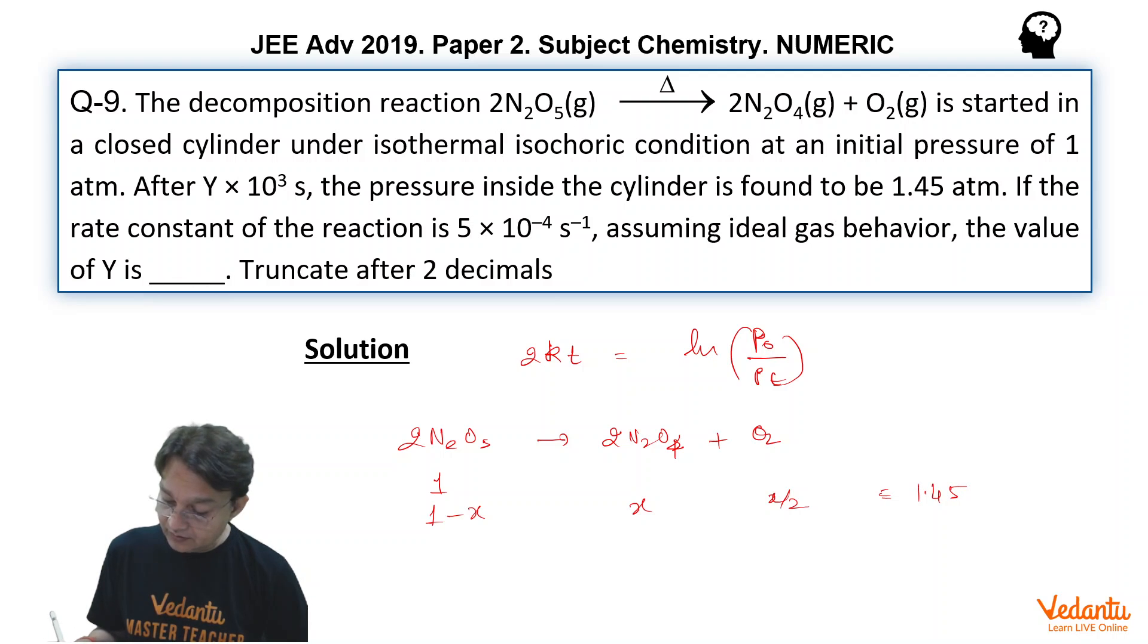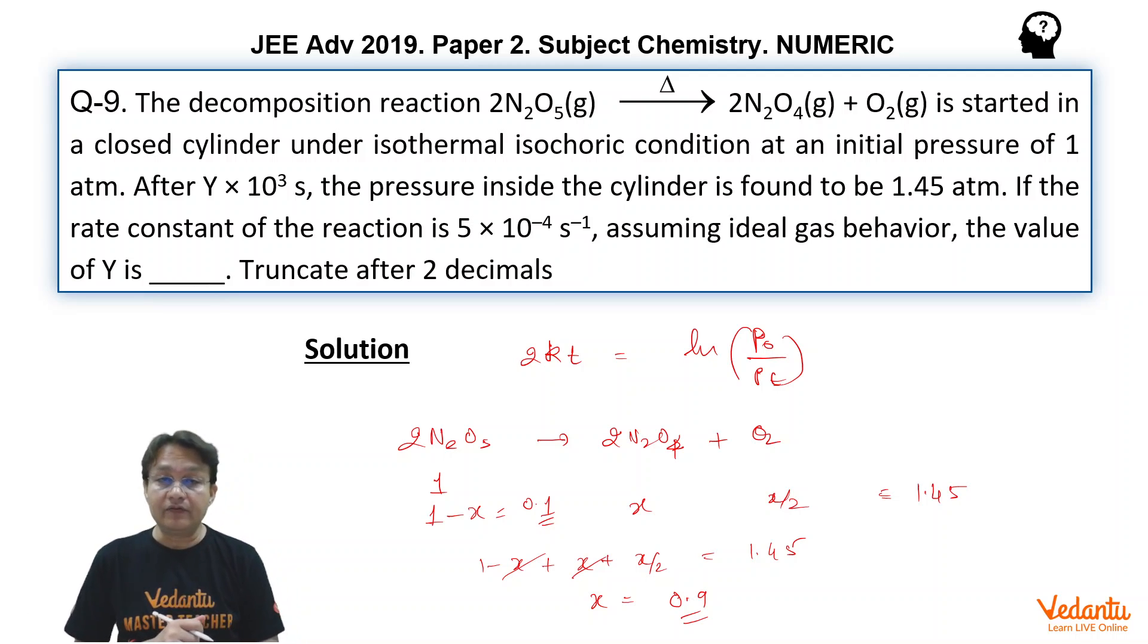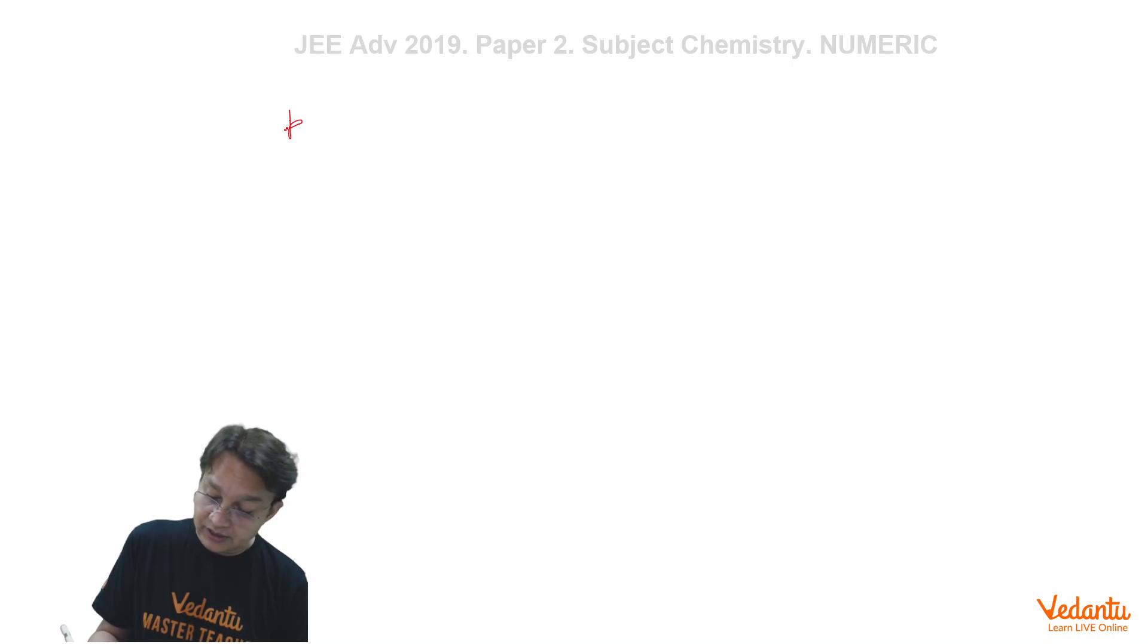On solving, we can get 1-x+x+x/2 equals 1.45, which gives us that x equals 0.9. x is 0.9 means the pressure here will become 0.1. So that means pressure after time t will become 0.1. So if we substitute this in this equation, then kt will be ln(1/0.1), which is simply ln(10), which is simply 2.303.